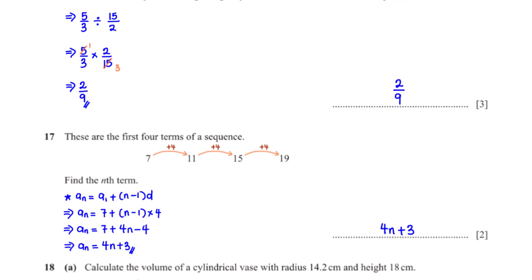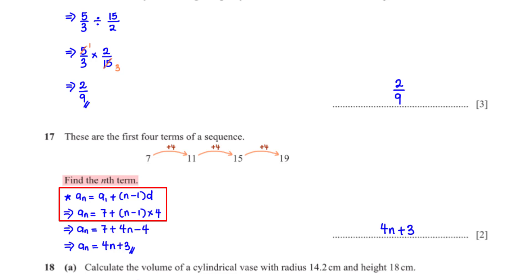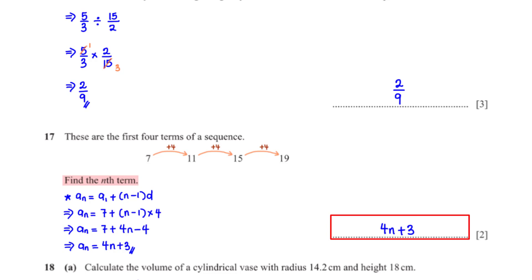These are the first four terms of a sequence. Find the nth term. The terms increase by a constant difference of 4. Using the formula for an arithmetic sequence: nth term = a₁ + (n−1)d, where a₁ = 7 and d = 4. Expanding: 4n − 4 + 7 = 4n + 3.